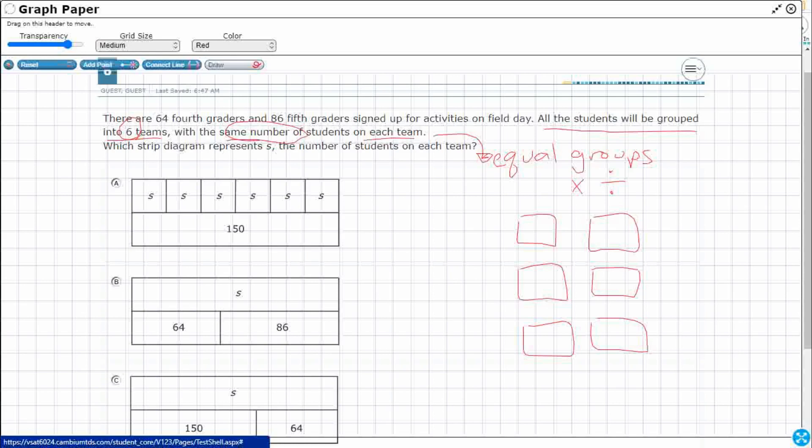So how many kids do we have? We've got 64 and 86. And I guess they're playing together. So I don't think we have a fourth grade team or fifth grade team. All the students will be grouped together. So we just need to put them together.